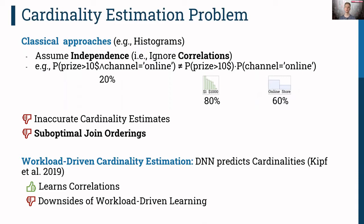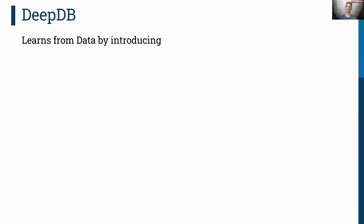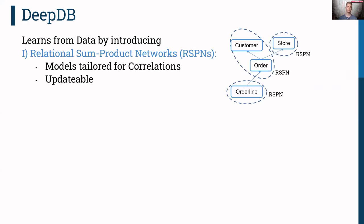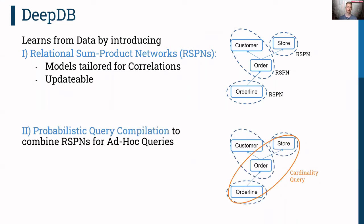Workload-driven cardinality estimation was suggested to address this — correlations are learned by deep neural networks. However, it also comes with the general downsides of workload-driven learning, motivating our approach. In contrast, DeepDB is entirely data-driven, enabled by two core contributions. First, we introduce relational sum-product networks (RSPNs), which capture correlations present in the data. To scale to larger schemas, we learn several models over preferably correlated joins of tables, and these models are completely updatable without retraining. Second, we introduce probabilistic query compilation, which allows us to combine various models to answer a query — for instance, estimating a cardinality that spans several models. These two ingredients allow DeepDB to learn the data distribution of a complex relational schema.